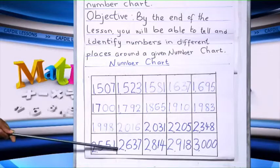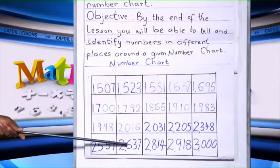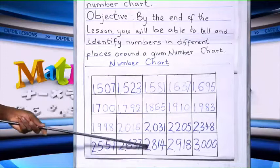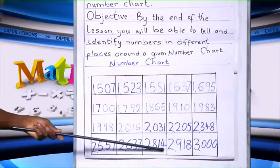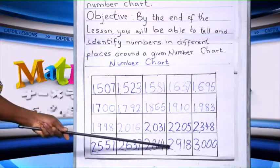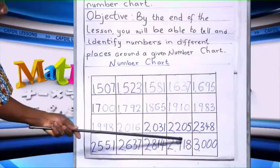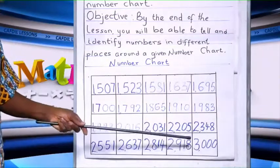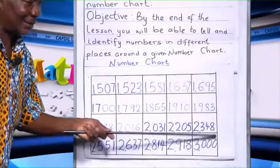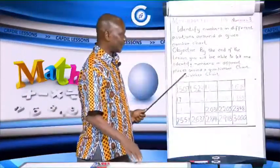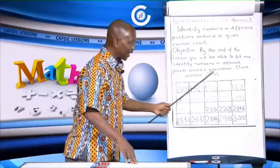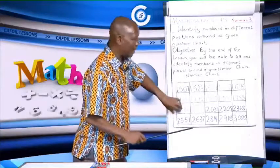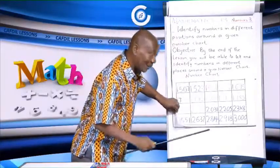Continuing: 2,637; 2,814; 2,918; 3,000. This is an example of a number chart — all these are numbers, so we will call it a number chart.